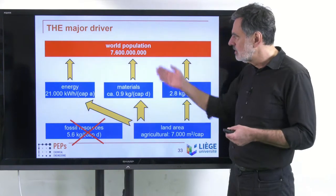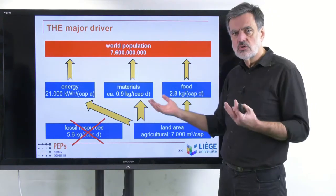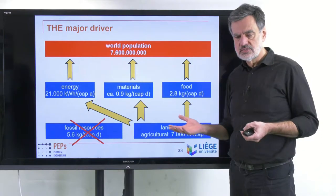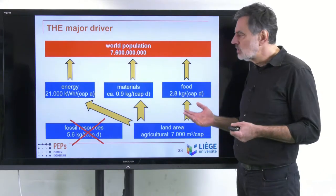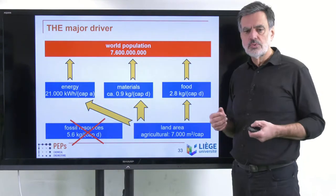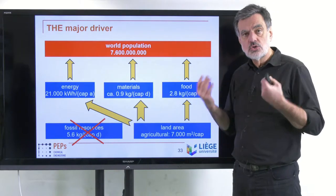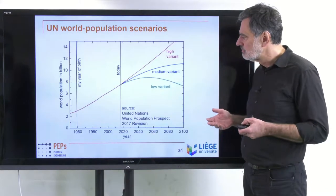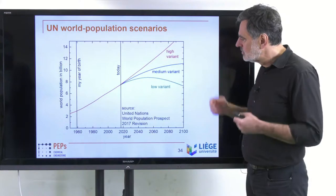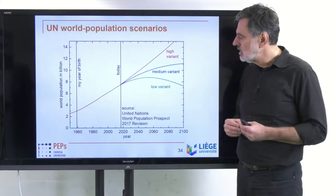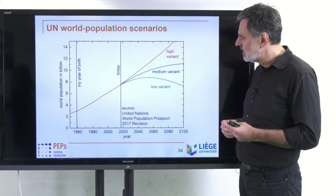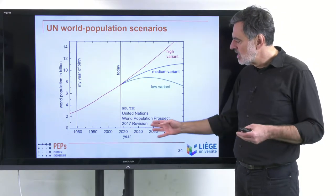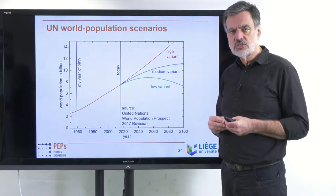That is actually why world population is such an important parameter — it drives everything. If population is reduced, overall consumption and waste production are less. Now the question is: what do we know about world population, how it has been developing in the past and how it will develop into the future? To get a first idea, I would like to show this diagram taken from the United Nations World Population Prospects, using the 2017 revision.